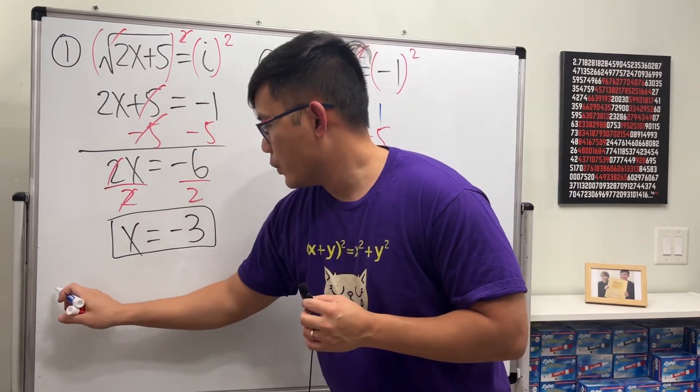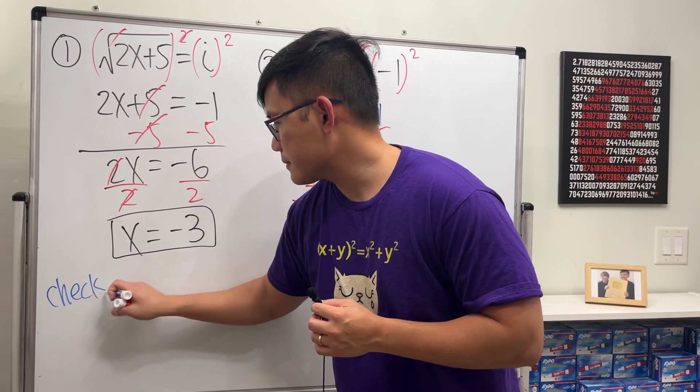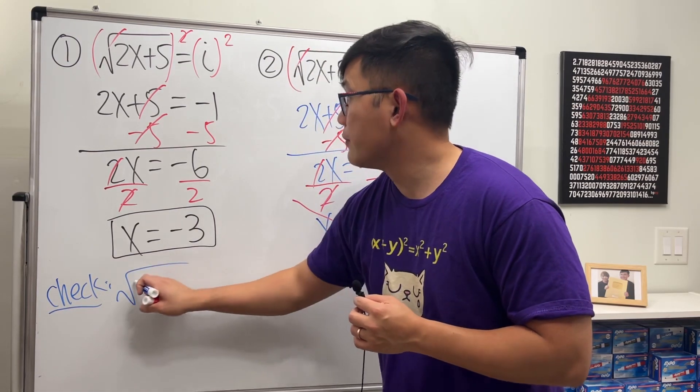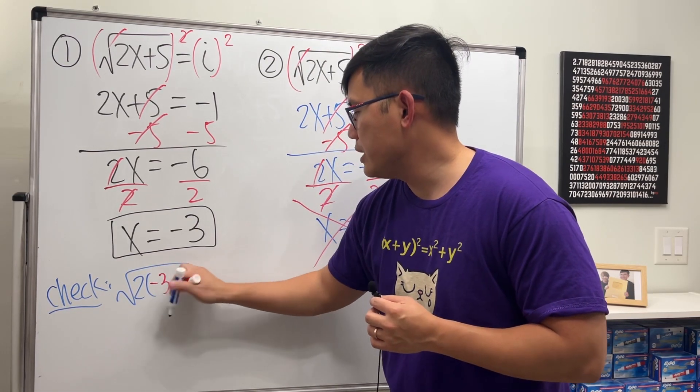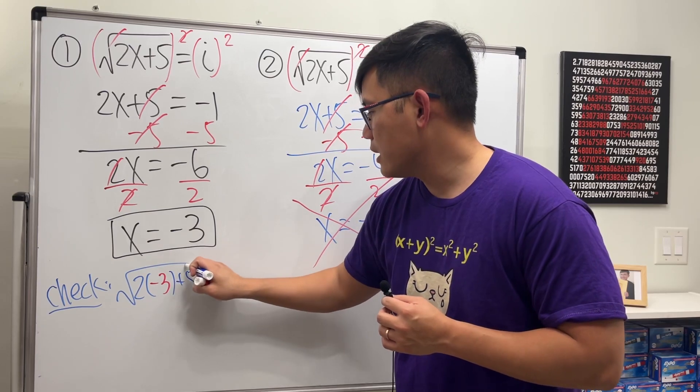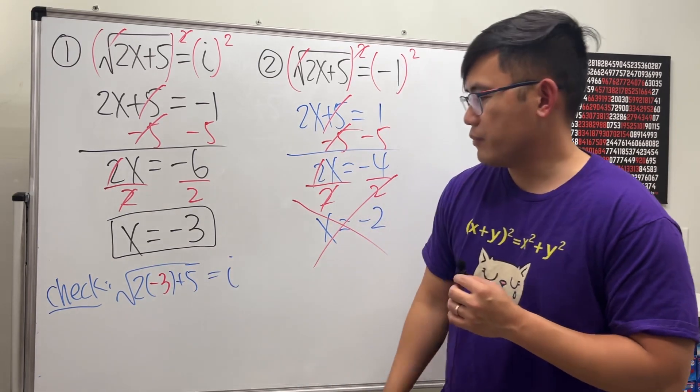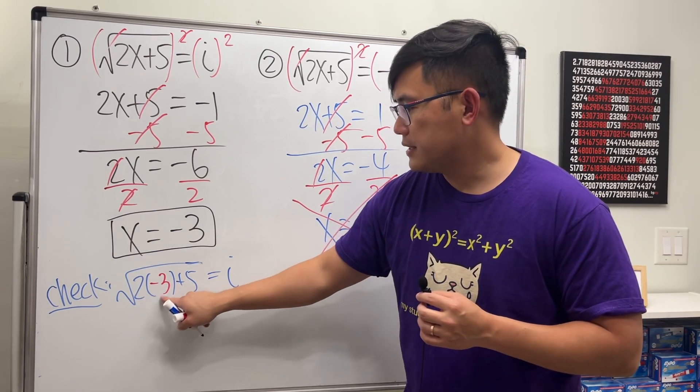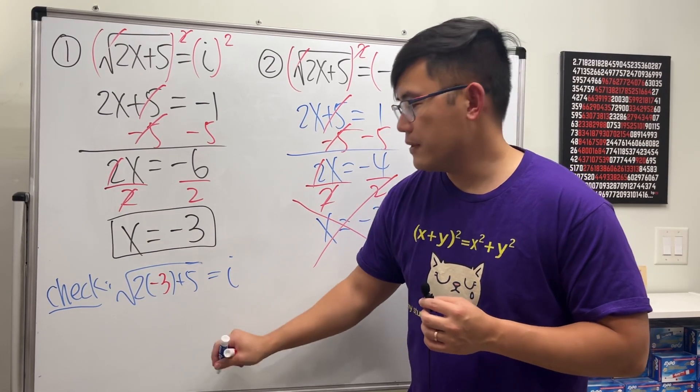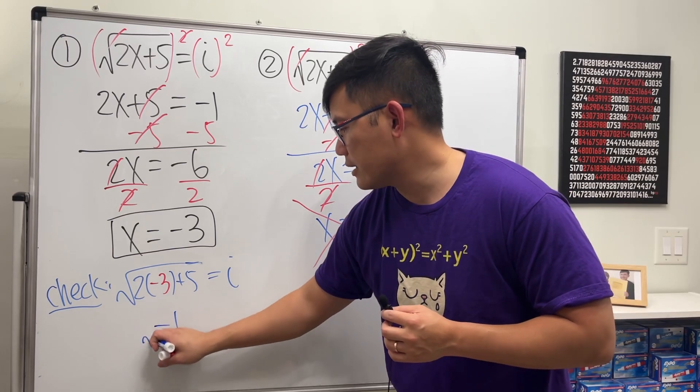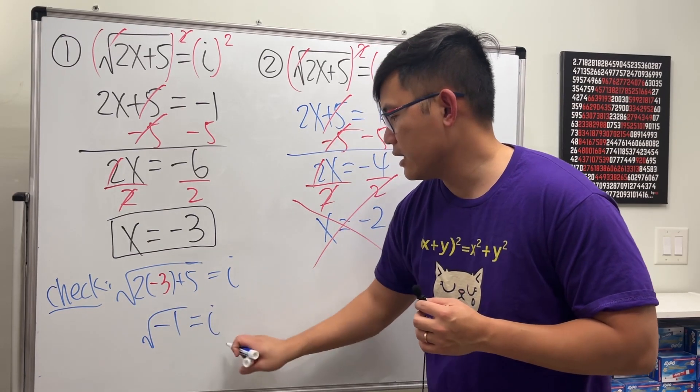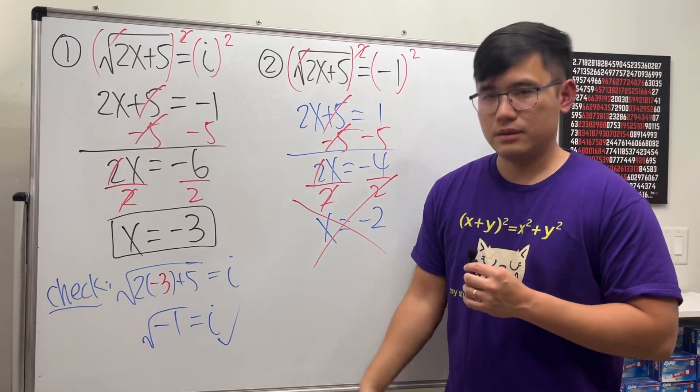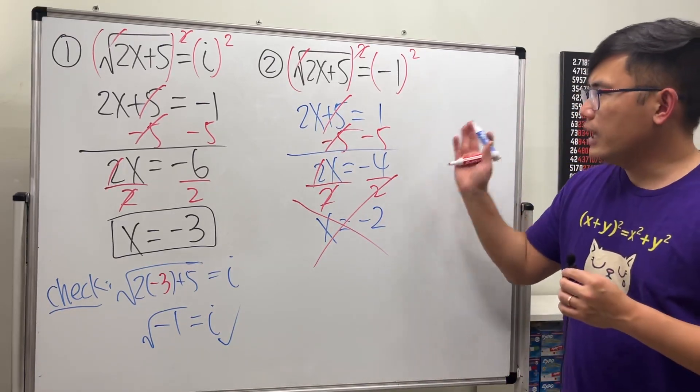When we do that, put negative 3 in here. We are going to get the square root of 2 times negative 3 and then plus 5. Will that give us i? Let's see. Here we have negative 6 plus 5, that's negative 1, and then take the square root of that. Do we get i? Yes, done.